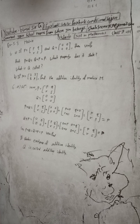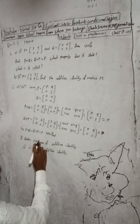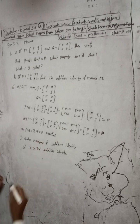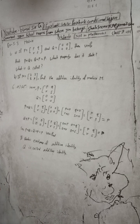Let me check the book answer. The answer in the book for 6a is: existence of additive identity, and Q is called the additive identity. Our answer is correct.